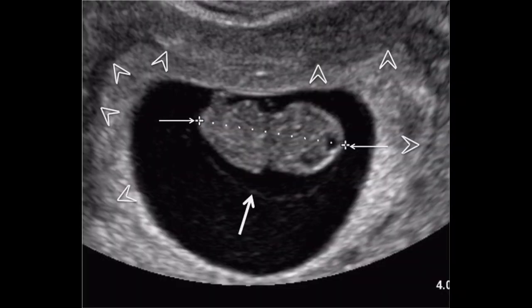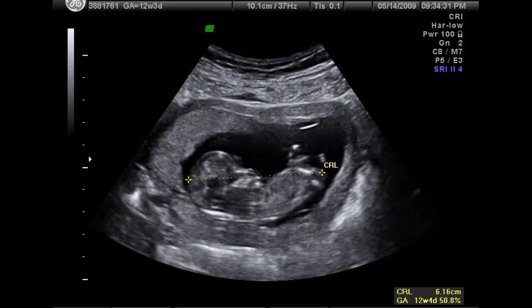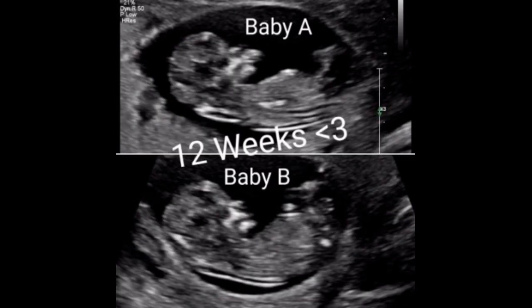The crown rump length is predictive of fetal age with an error of 3 days at 90% confidence limits from 7 to 10 weeks, and of 5 days from 10 to 14 weeks gestation. The crown rump length grows approximately 10 mm per week from weeks 8 to 12.